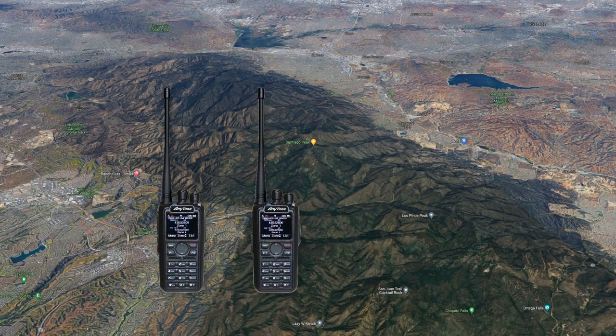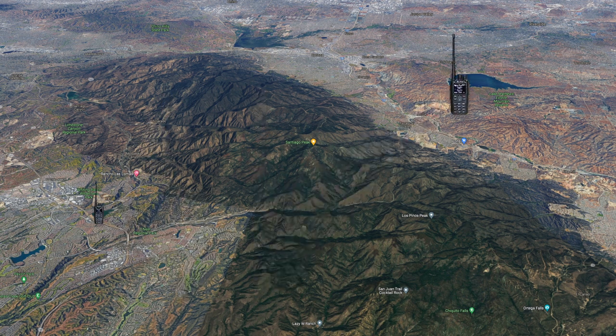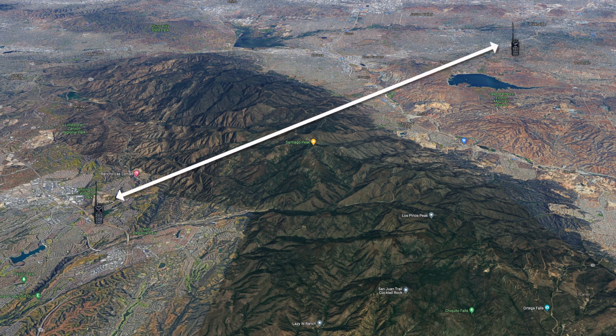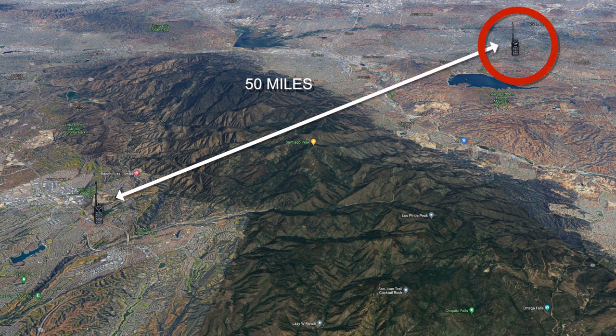Now let's look at repeaters. At the end of the day, Bob and Dave drive to their respective homes about 50 miles apart. They'd like to talk on the radio from home, but the distance is great and a large mountain is in the way. We'll use this map in Southern California for our example. Bob lives in Orange County on the left and Dave lives in Riverside County on the right. Because of both the distance and the mountain in the way, there is no chance that the two radios can reach each other in simplex mode.